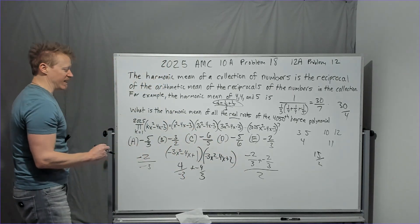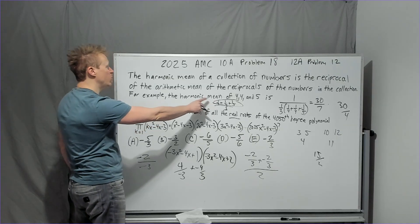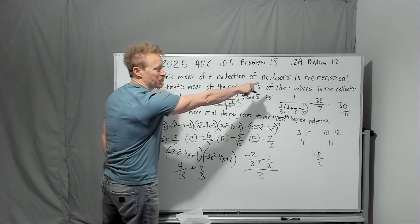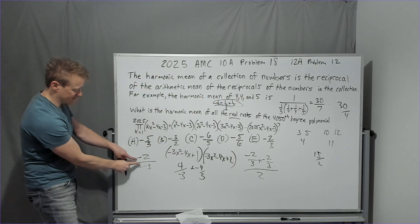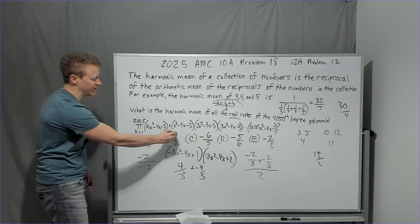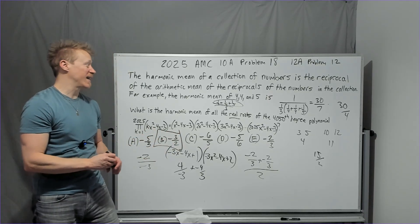So what does that mean? We're still not done. We only have the average of the reciprocals. We now need the reciprocal of the average of the reciprocals. So we take this negative 2/3, and we flip it upside down to get negative 3/2, and that will be the answer.